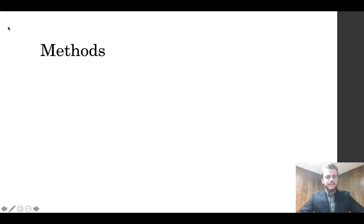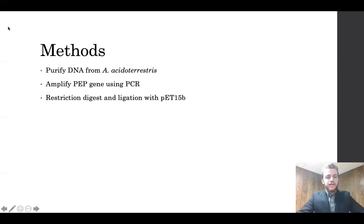So what I did in this experiment is I purified DNA from A. acidoterrestris, then I designed primers for the gene of interest, that way I could amplify the PEP gene using polymerase chain reaction. The product, along with the pET15b expression vector, went through a restriction digest and was ligated together.